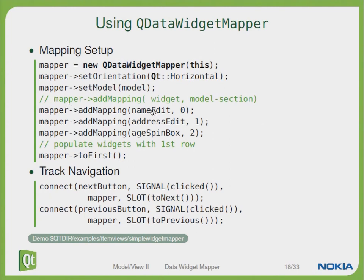The name edit field goes to column 1, the address edit represents column 1, and the age spin box represents the column 2 data. Then we tell the mapper to go to the first item. There are some special slots available to track the navigation, so that we can easily connect the next button with the toNext slot to navigate between data rows.